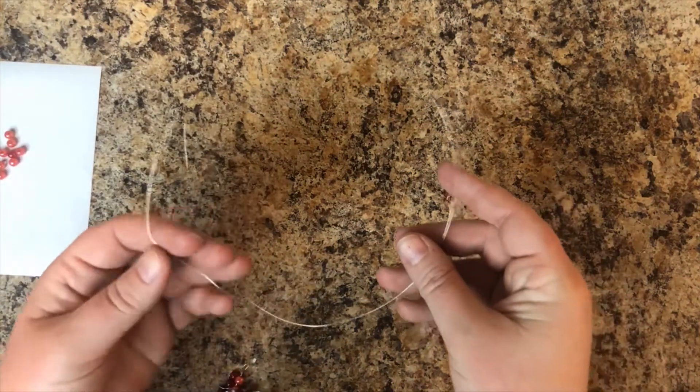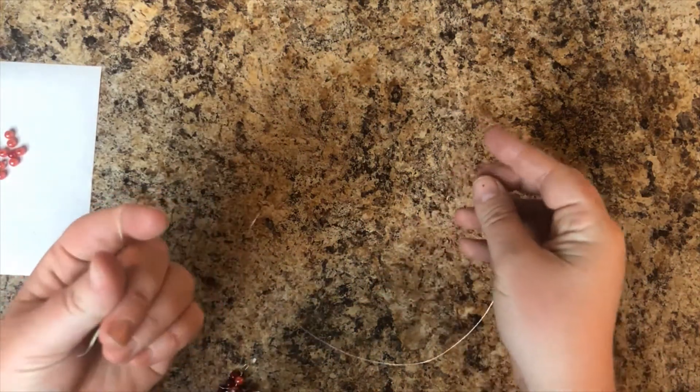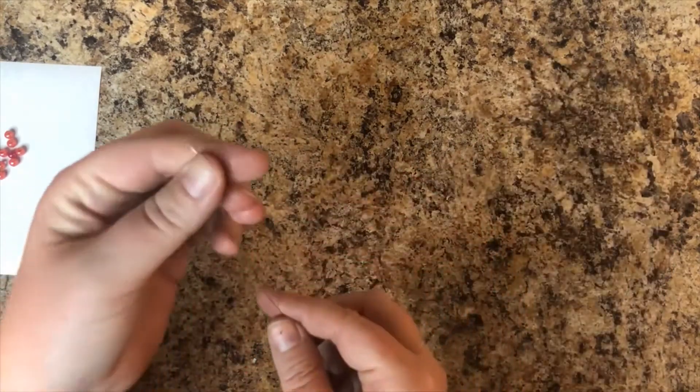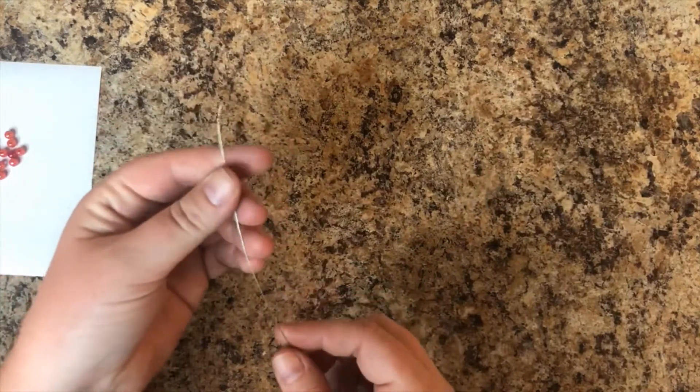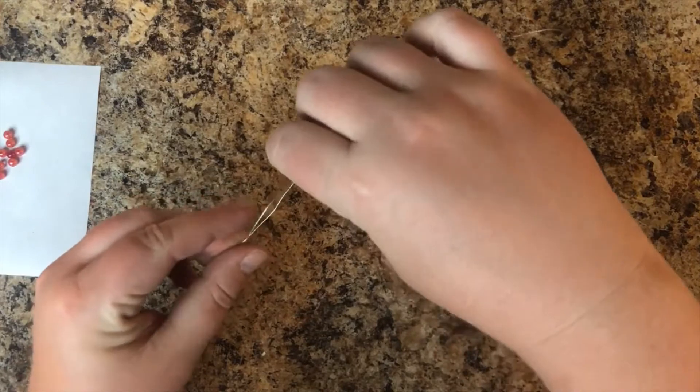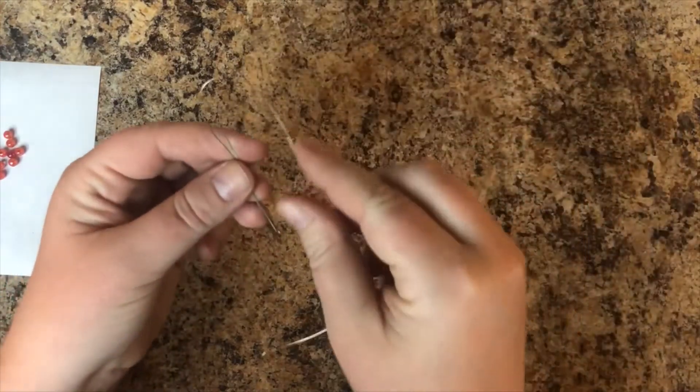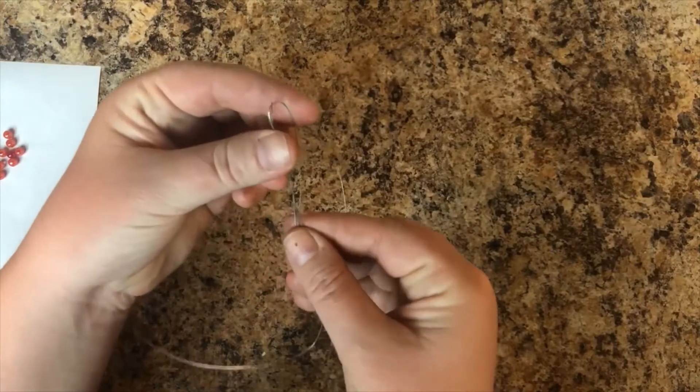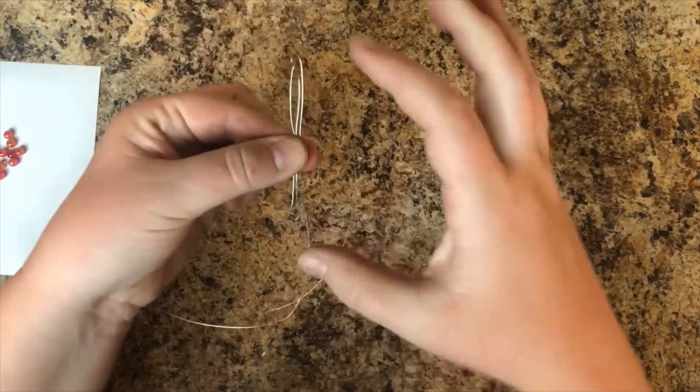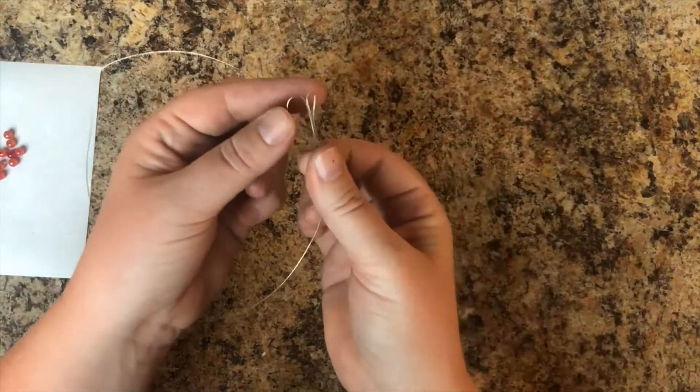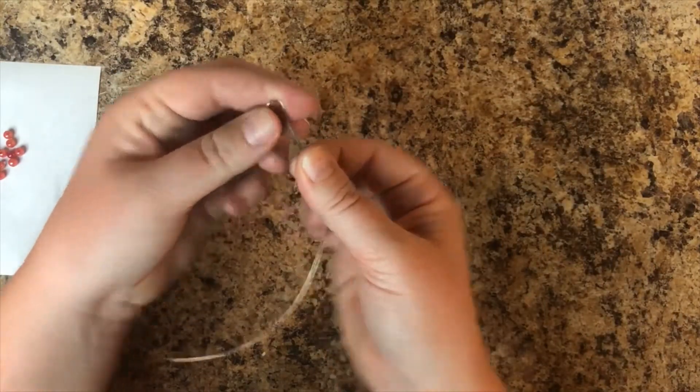Okay, so the first thing we are going to do is we are going to create the stem base before we put the beads on it. So what you're going to do is take the wire, and you're just going to fold up and down a few times just like this. And you'll kind of want to make sure that it stays even on both sides every time you fold. You'll want to make sure that the new fold is pretty even with the next one.